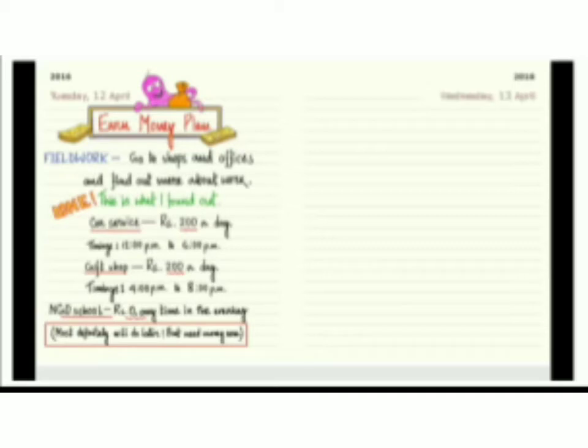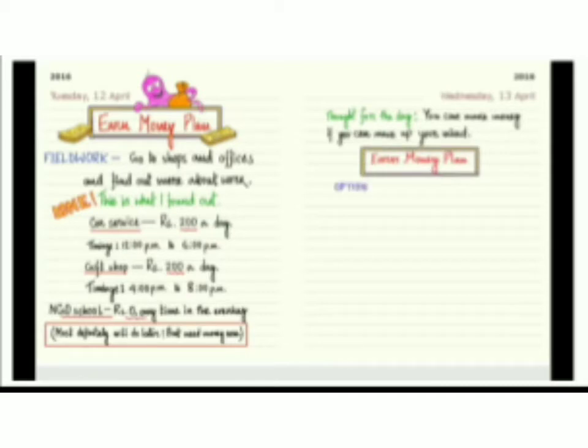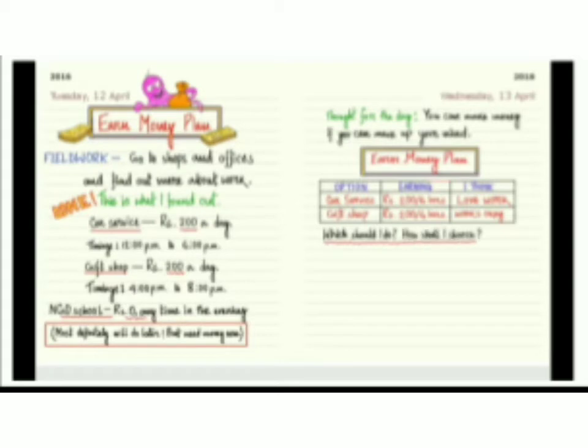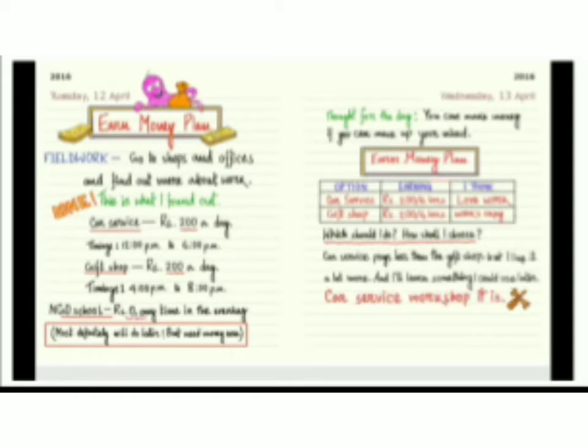Wednesday, 13th April. Thought for the day: you can make money if you can make up your mind. Option earning: I think car service Rupees 100 for 6 hours, love work. Gift shop Rupees 100 for 4 hours, works okay. Which should I do? How shall I choose? Car service pays less than the gift shop, but I like it a lot more and I'll learn something I could use later. Car service workshop it is. Has Madhavan made the right choice?